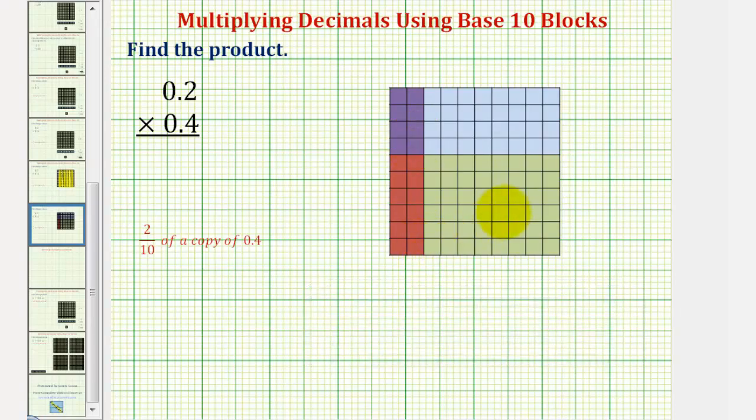Notice how the flat is one whole, partitioned into 100 equal pieces. And the double shaded region is 1, 2, 3, 4, 5,